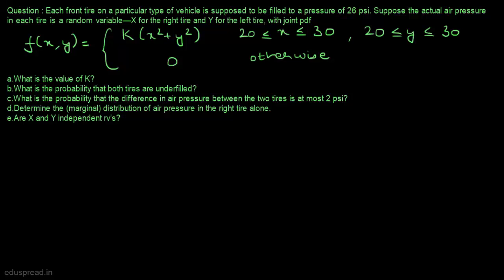In this video, I am going to solve this question. Each front tyre on a particular type of vehicle is supposed to be filled to a pressure of 26 PSI. Suppose the actual air pressure in each tyre is a random variable — x for the right tyre and y for the left tyre — and this is the joint probability density function.